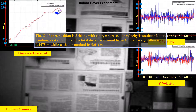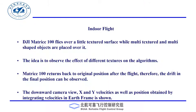This is the final result in terms of position for the first experiment. In the second experiment, the Matrix 100 is moved over a lightly textured surface while multi-shaped and multi-textured objects are placed over it. Our algorithm shows that the Matrix 100 has reached back to the starting place, which is indeed the case.